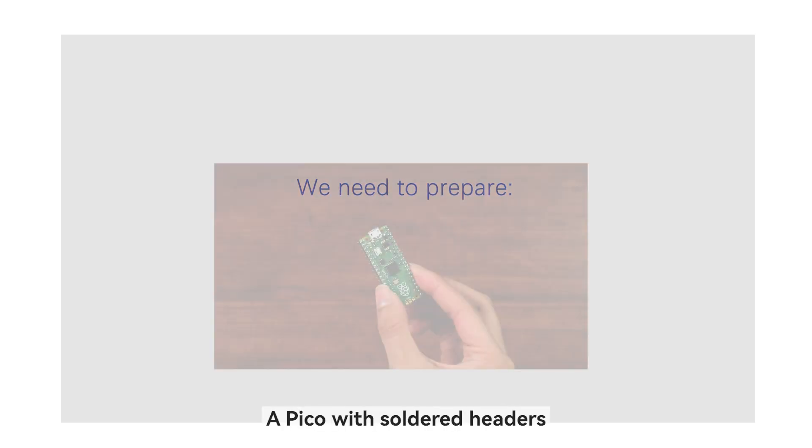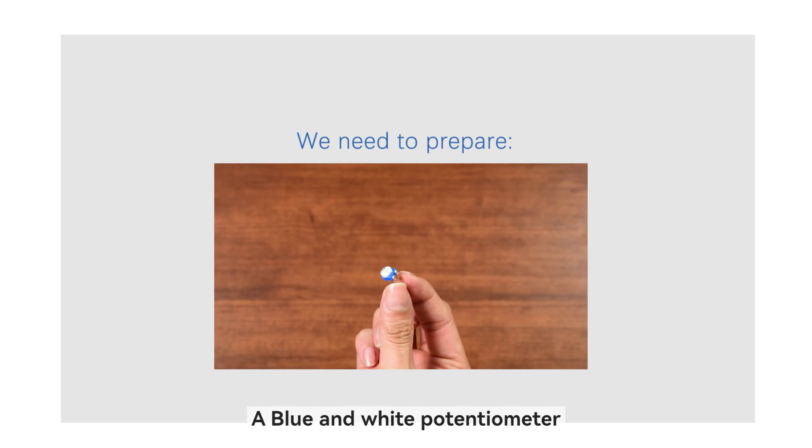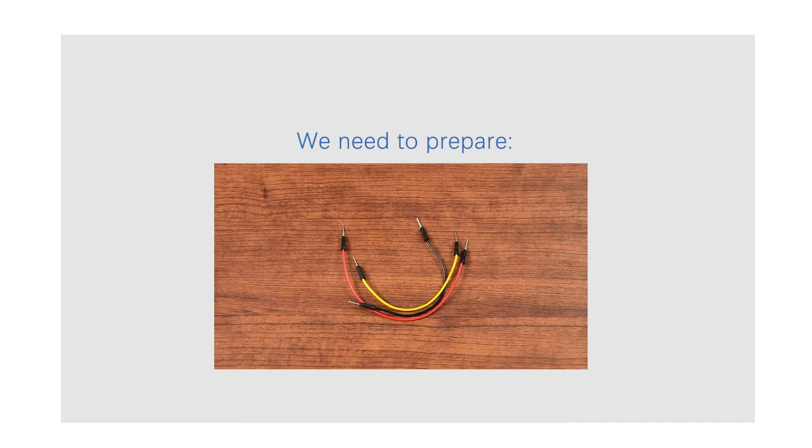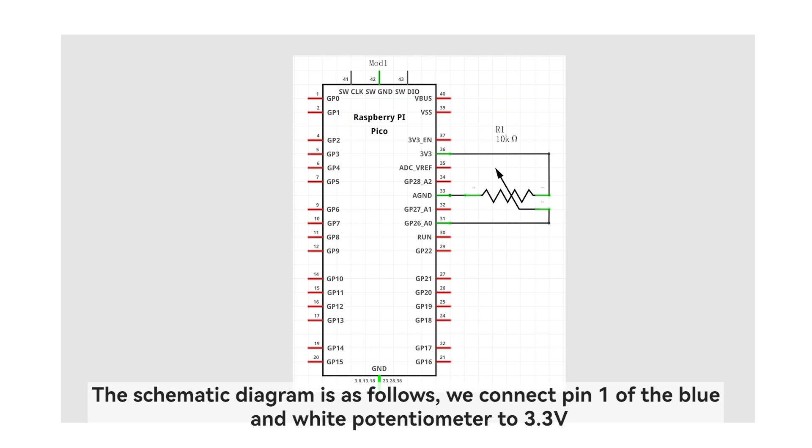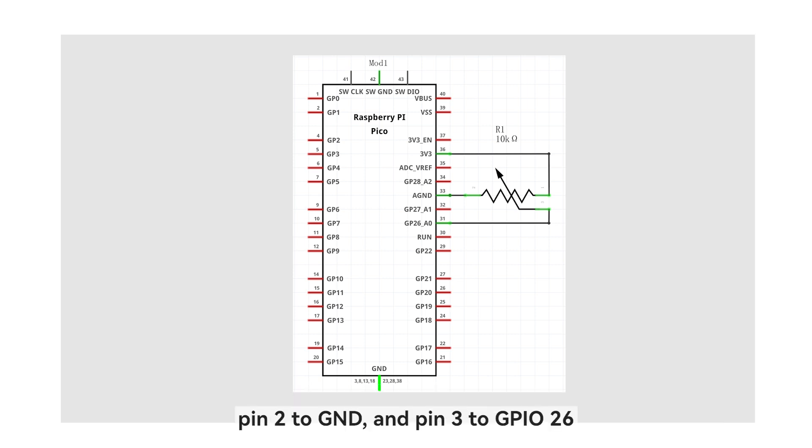We need to prepare a Pico with soldered headers, a blue and white potentiometer, and jumper wires. The schematic diagram is as follows: we connect pin 1 of the blue and white potentiometer to 3.3V, pin 2 to GND, and pin 3 to GPIO 26.